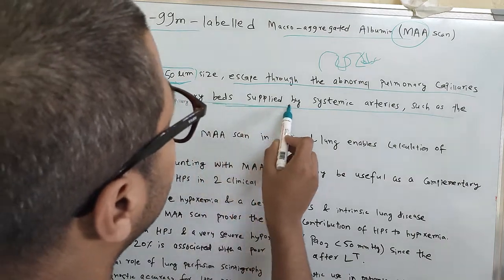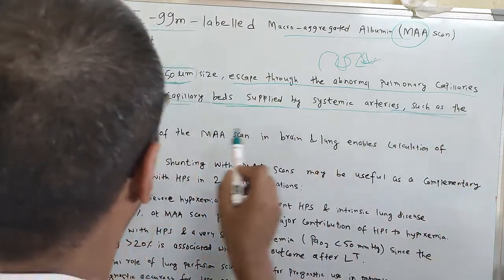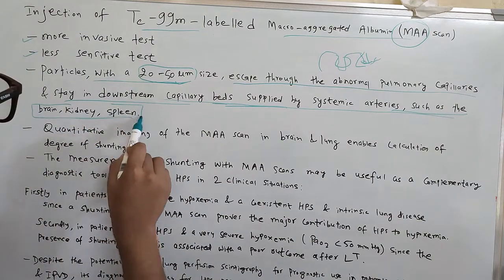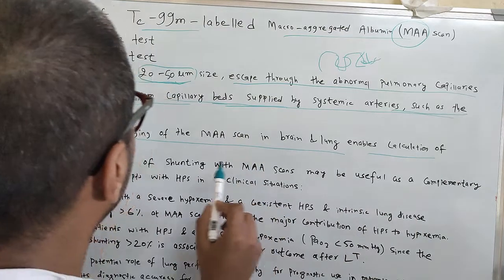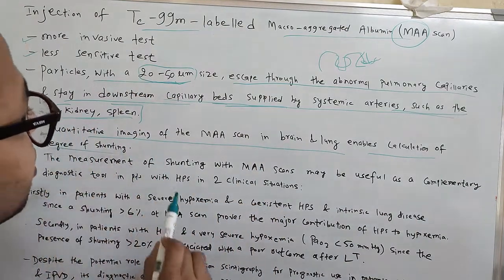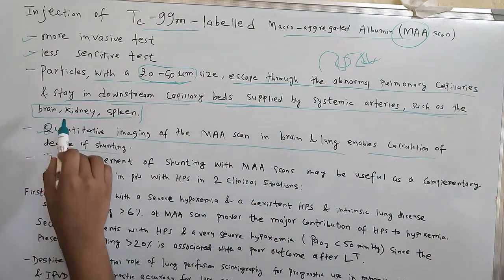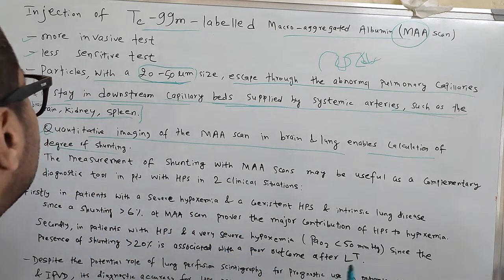They stay in downstream capillary bed supplied by systemic arteries such as the brain, kidney, and spleen. Quantitative imaging of the MAA scan in brain and lung enables calculation of the degree of shunting.